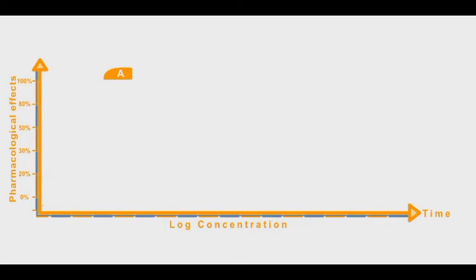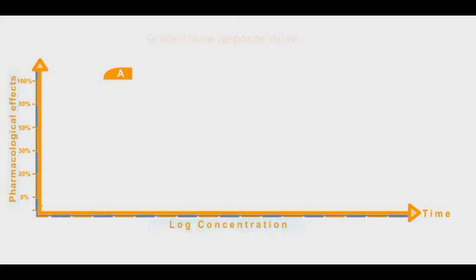Plotting the percentage of maximal pharmacological effect against the logarithm of drug concentration produces the so-called graded dose-response curve. As the drug concentration increases, the pharmacological response increases until it reaches a plateau maximum value.